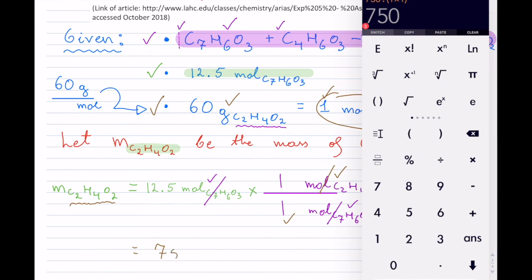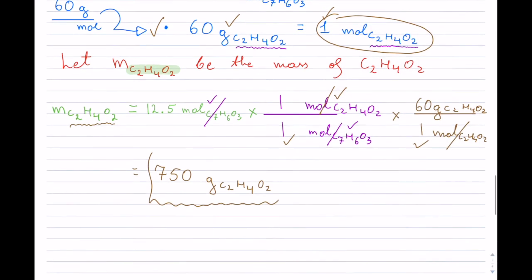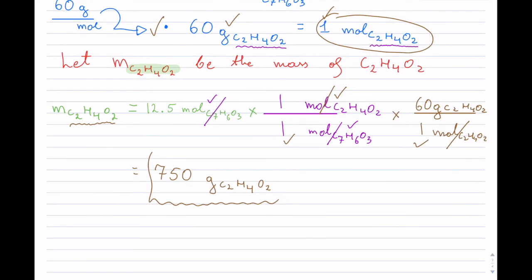So this is 750, and it is grams of C₂H₄O₂, and that would be my final answer here. So you can put your closing statement and just say that 750 was the mass of C₂H₄O₂ that was generated.